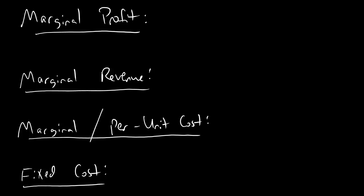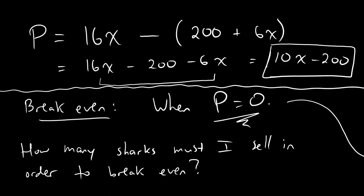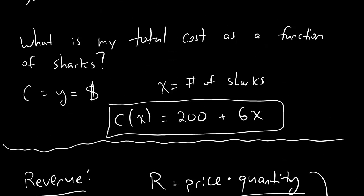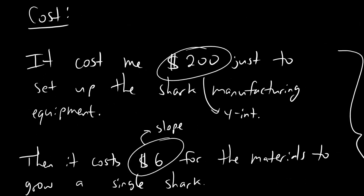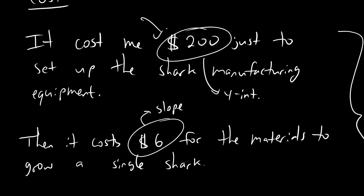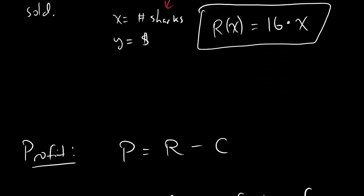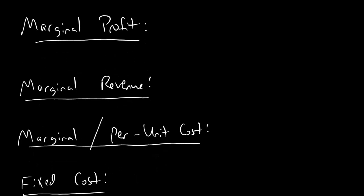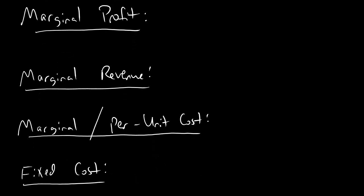Fixed cost just means how much money you have to pay to get started before you can even start making and selling sharks. So if we scroll all the way back up here, let's see what we were doing with the cost. It cost me $200 just to set up the shark manufacturing equipment. So it's $200 out of my pocket before I can even start making sharks, and so $200 is going to be the fixed cost. Fixed cost is how much money you have to pay before you even start making stuff. Fixed cost is $200.